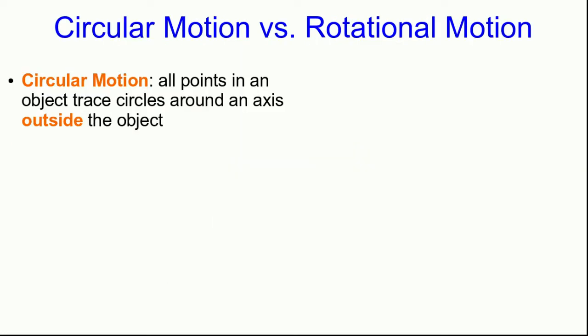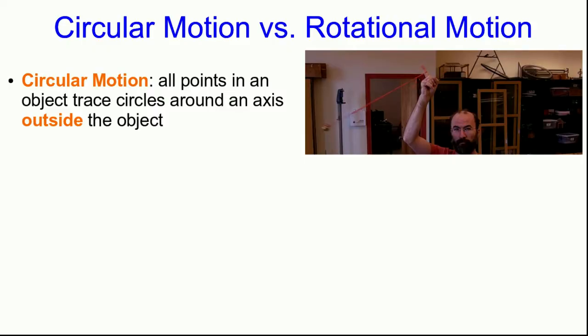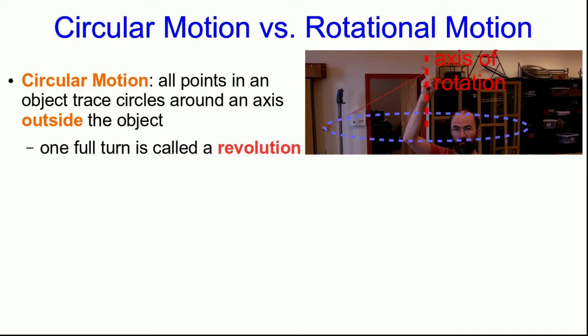Let's start off by establishing some terminology, and also by distinguishing circular motion, which we're going to study, from rotational motion, which we're not going to study. So here's an example. I'm whirling a ball around my head on the end of a string. And this is an example of circular motion. In circular motion, all points in the object are tracing circles around an axis, and that axis is outside of the object. And one full turn of the object around the circle is called a revolution.